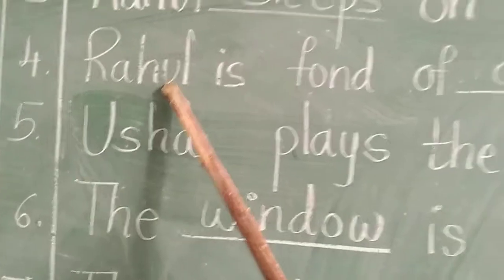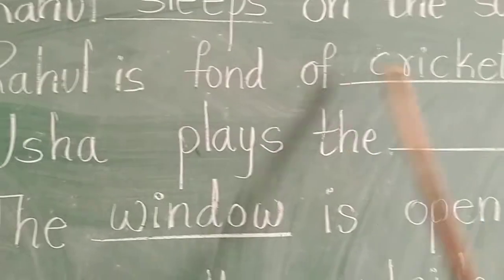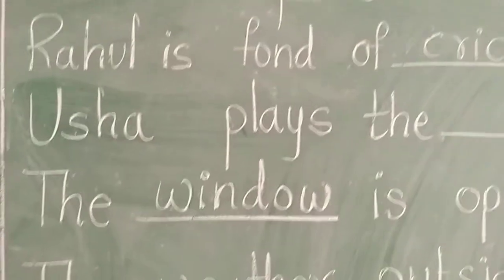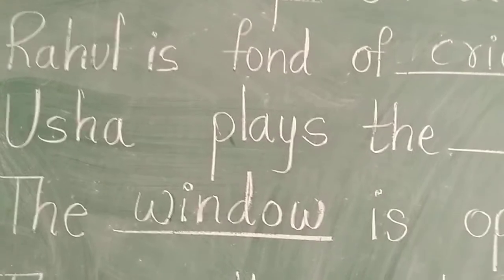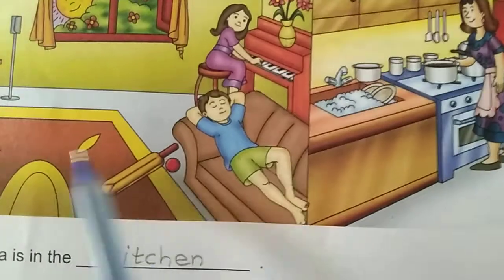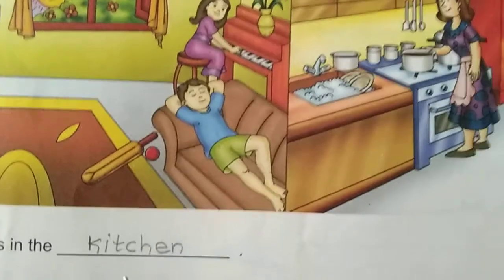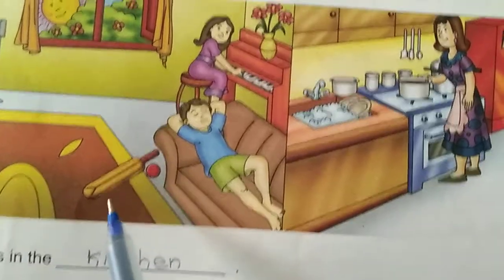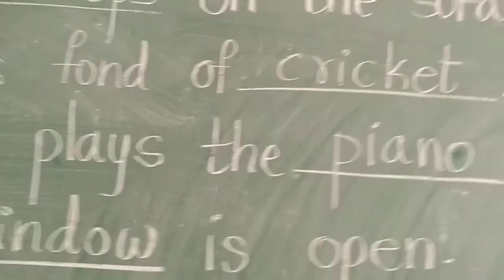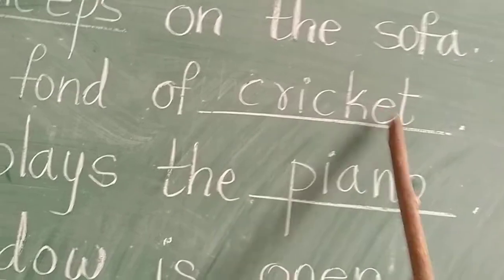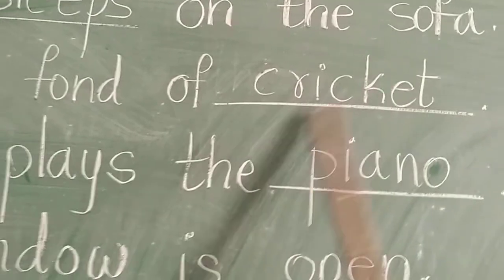Fourth one: Rahul is fond of dash. Rahul is fond of what? In the picture you can see a cricket bat and ball. So the answer is cricket. Spelling: C-R-I-C-K-E-T, Cricket.